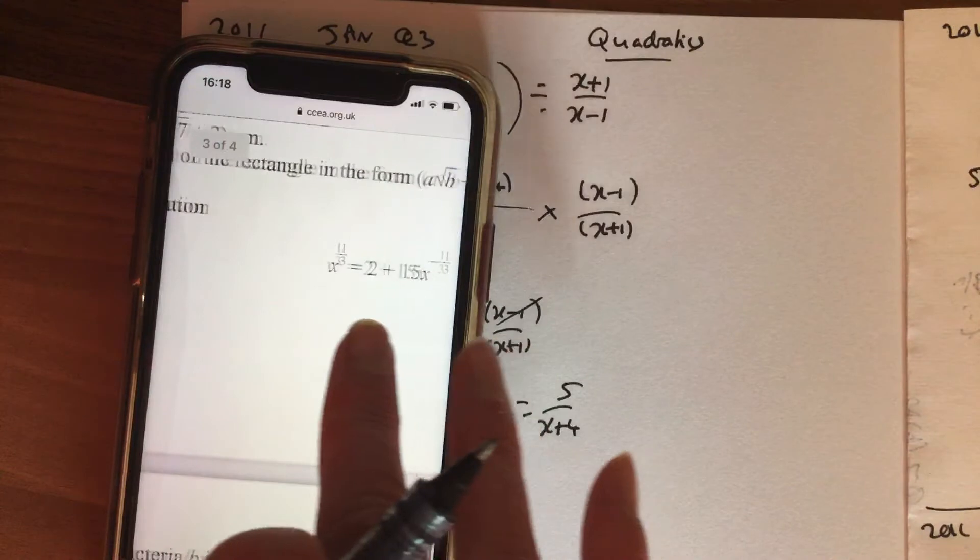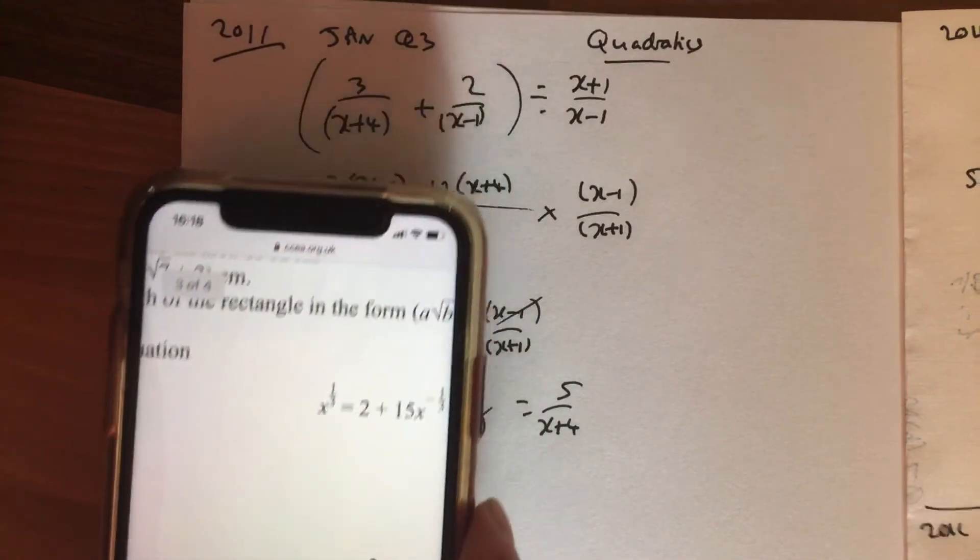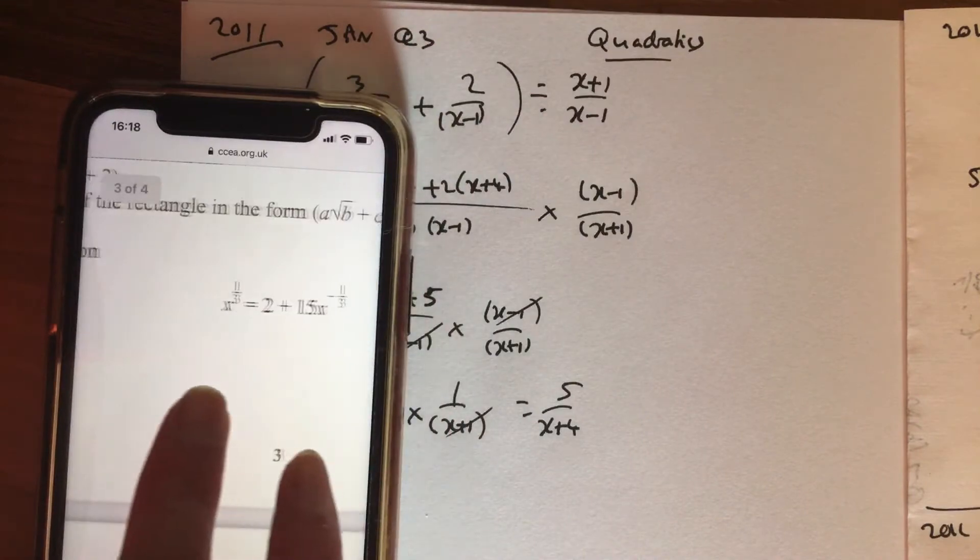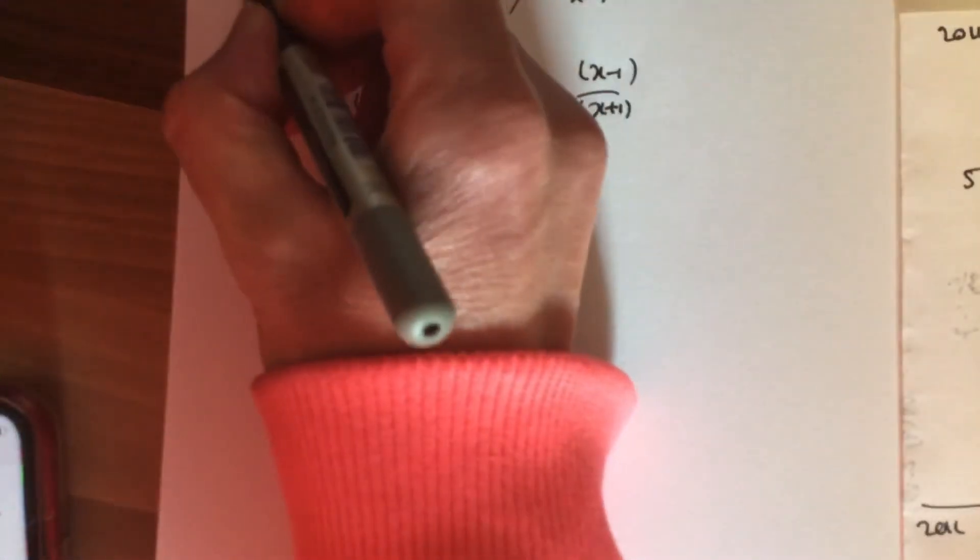I'm going to look at question 5c of that same paper. It's quite an interesting one here. So it's a quadratic, sorry, it's a weak quadratic. So I'll just write that one out again there.